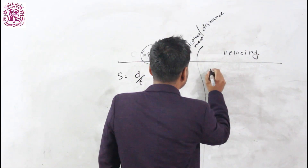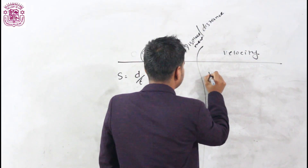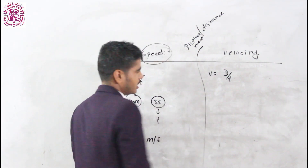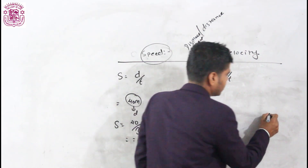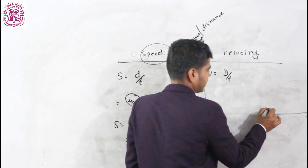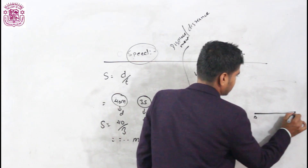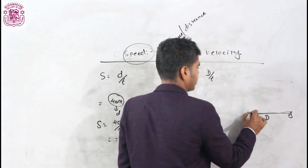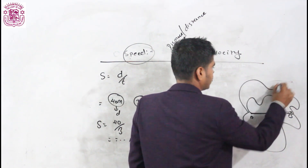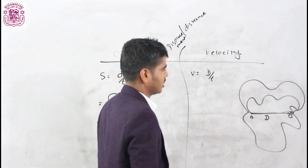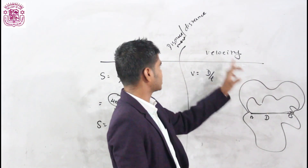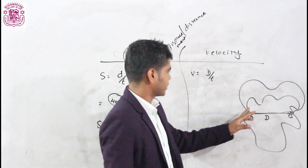Similarly, velocity is defined as the displacement per unit time. We have already been clear about distance and displacement — while going from A to B, the shortest distance between A and B is called displacement, whereas the path followed or the length between the two points is called distance. All displacements are distance, but all distances are not displacement.